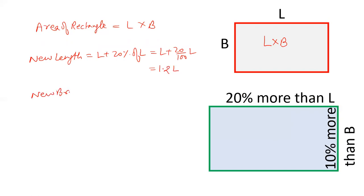And new breadth will be B plus 10 percent of B. That is B plus 10 by 100 into B. That will be 0.1 B. B plus 0.1 B is 1.1 B.